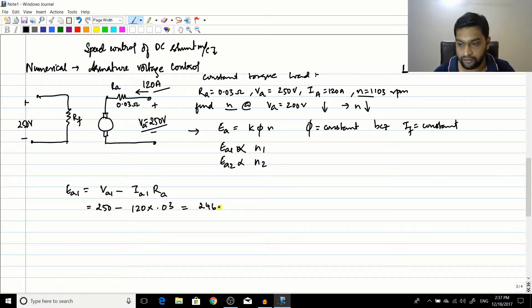So the value here is 246.4 volts. You can use your calculators and find the value. EA2 will be equal to VA2 minus IA2 into RA.